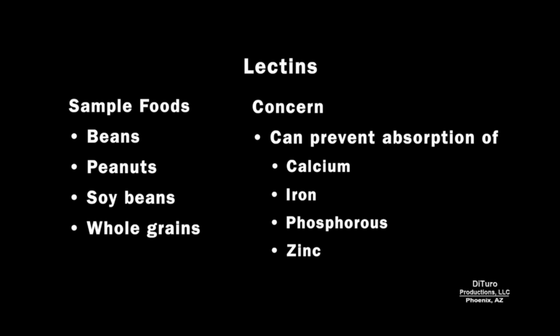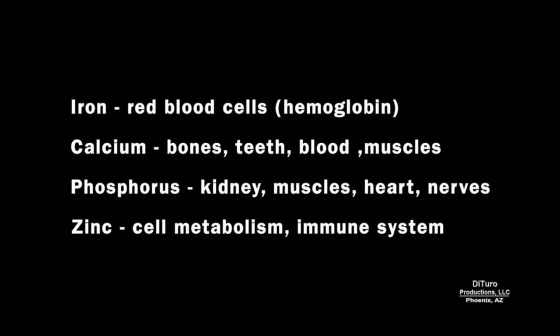A popular anti-nutrient on the low-carb diet circuit are lectins. Lectins are supposed to prevent absorption of calcium, iron, phosphorus, and zinc. They are found in beans, peanuts, soybeans, and whole grains. Iron, calcium, phosphorus, and zinc are essential nutrients for a healthy life.